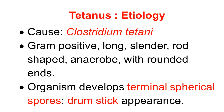Tetanus is caused by the Clostridium tetani organism. The organisms are gram positive, long slender rods. They are anaerobes with rounded ends. A characteristic feature is that they develop a terminal spherical spore on a long slender rod-shaped body, giving a typical appearance of a drumstick. So the typical drumstick appearance of Clostridium tetani is the characteristic morphology.